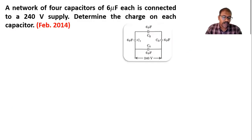The question is: a network of four capacitors of 6 microfarads each is connected to a 240 volt supply. Determine the charge on each capacitor. You can see the network here and we have to find out the charge on each capacitor.